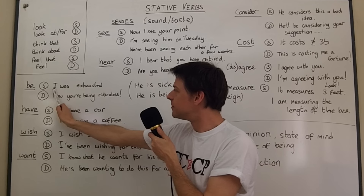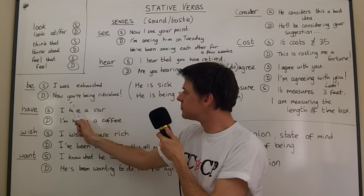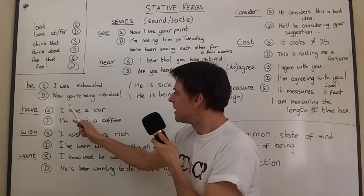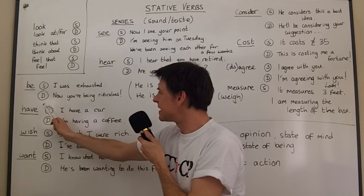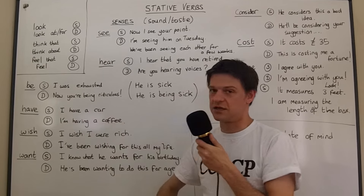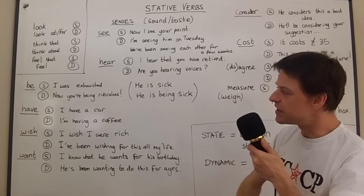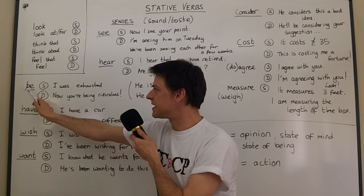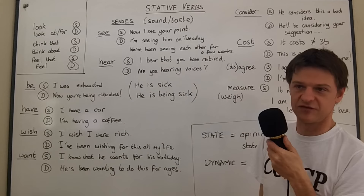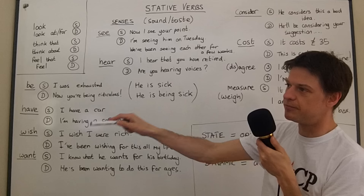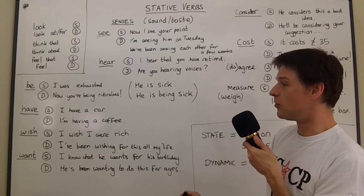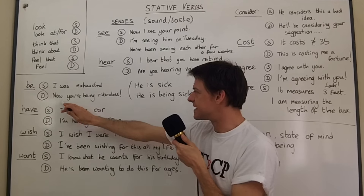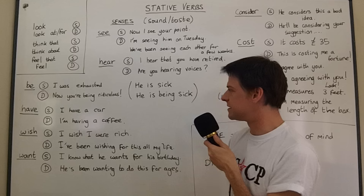Here is another example: 'I was exhausted' — that's just talking about the state you were in. Dynamically, 'now you are being ridiculous' is talking about behavior. With behavior, we can use 'be' in a dynamic sense — 'you're being stupid,' 'now you're being really clever,' or 'now you're being ridiculous.'